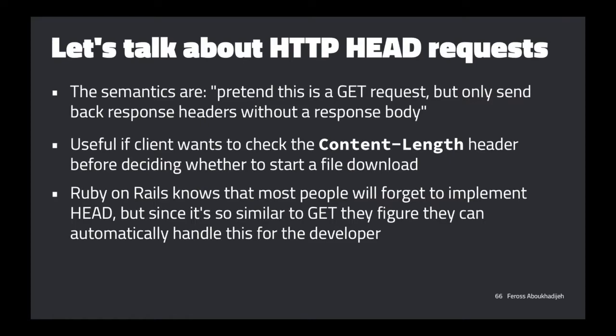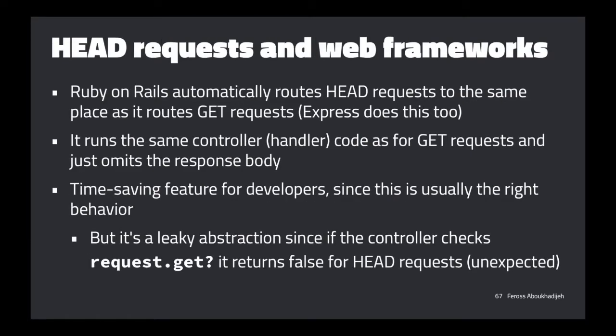So Ruby on Rails automatically handles HEAD requests by routing them to the same place as GET requests. It runs the same controller code and just strips the body from the response. This is a time-saving feature for developers and usually the right behavior — it's very handy. There's one problem with it: it's a slightly leaky abstraction. A leaky abstraction doesn't perfectly hide the complexity from the developer. Most of the time the developer doesn't need to know this exists.